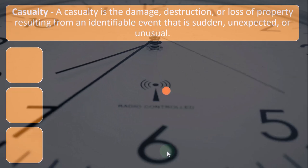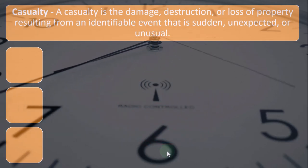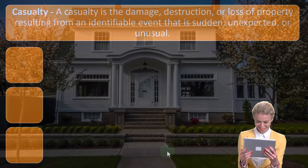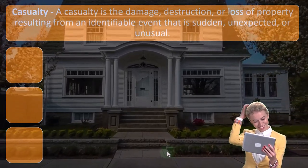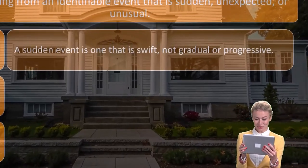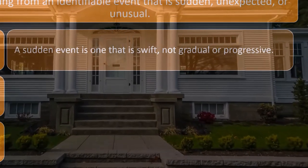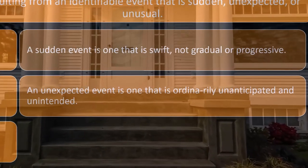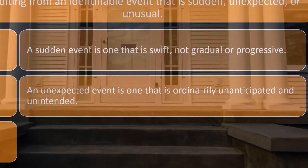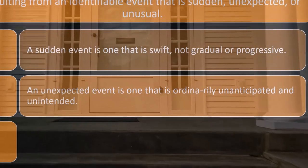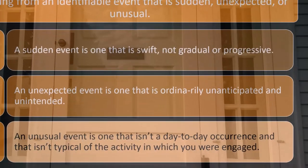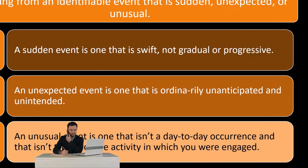For example, if it rains quite often and the rain caused the damage, that's not really unexpected. If it was a storm and your whole house blew away, then obviously that would be unexpected and generally unusual. A sudden event is one that is swift, not gradual or progressive — you can't claim the rust on your car over 30 years. An unexpected event is one that is ordinarily unanticipated and unintended. An unusual event is one that isn't a day-to-day occurrence and isn't typical of the activity in which you were engaged.